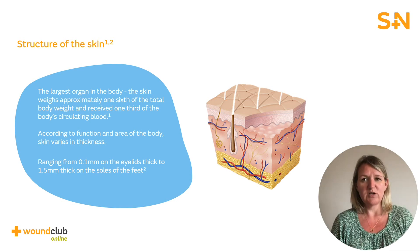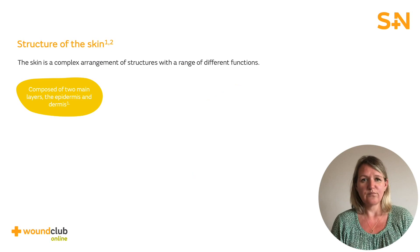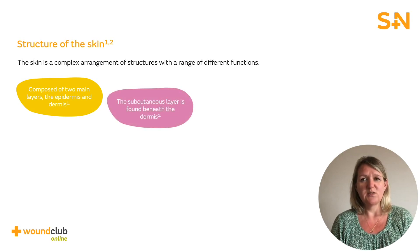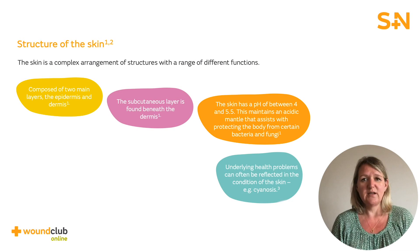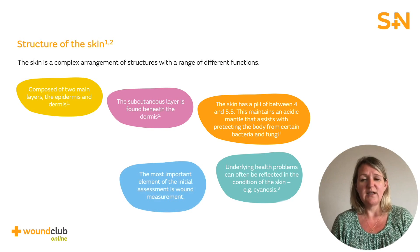The skin is a complex arrangement of structures with a range of different functions. It is the largest organ in the body, weighing approximately one-sixth of total body weight. It varies in thickness and is intricate in nature. The skin is composed of two main layers: the epidermis and the dermis. Beneath the dermis is the third layer called the hypodermis or subcutaneous layer. The normal pH of the skin is between 4 and 5.5, and being acidic in nature assists with protecting the body from certain bacteria and fungi. Changes in the skin may be one of the first indicators of an underlying health problem, making knowledge of what is considered to be healthy skin extremely important.